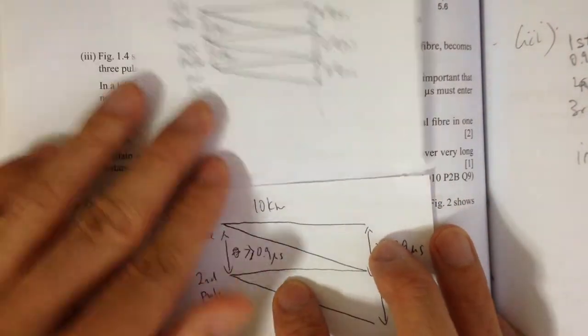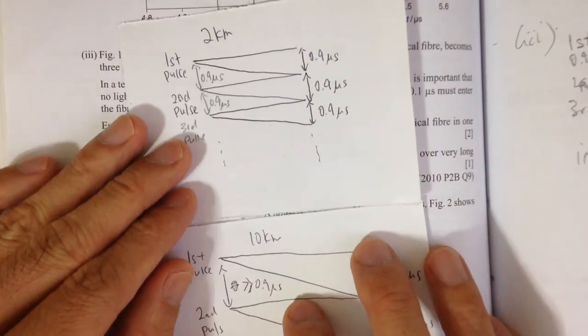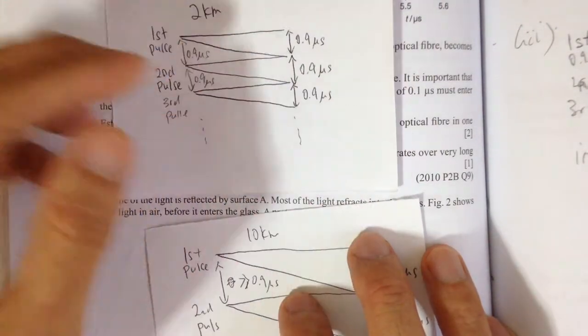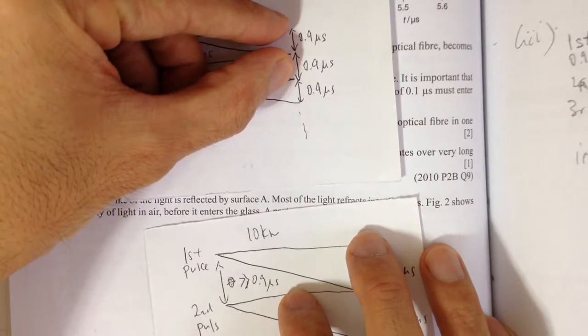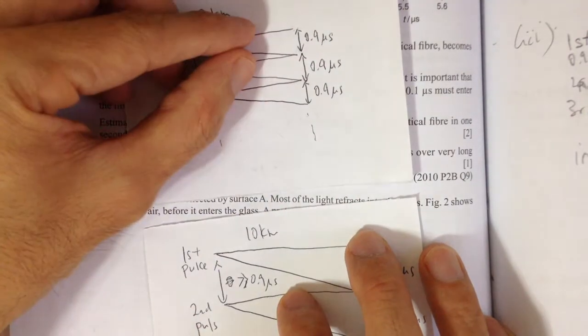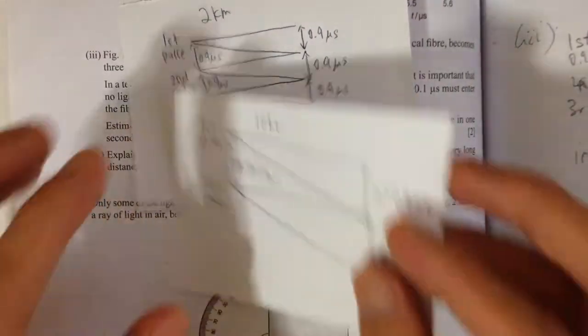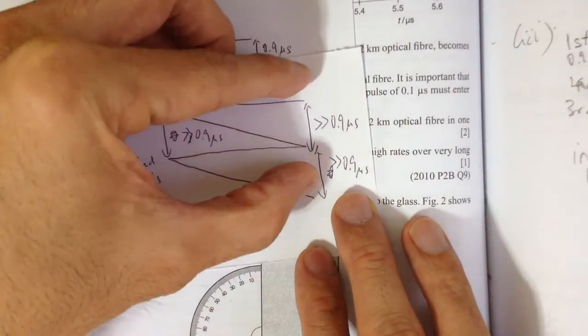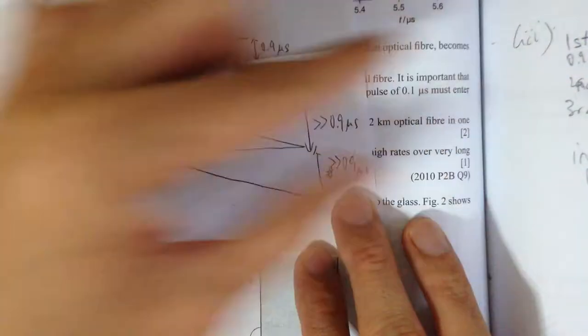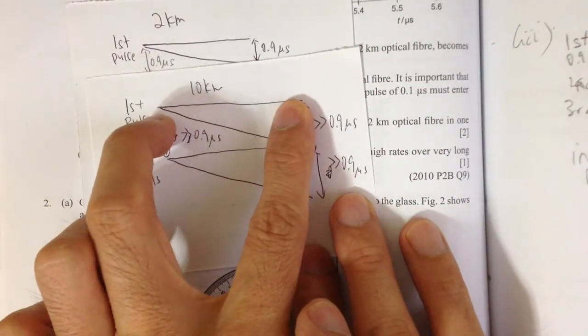So let's look at what is happening here. So this is for 1 pulse, for 2 km. We already have a spread of 0.9 microsecond. For 1 km, the spread is lesser. But imagine if you have something that is 10 km long. This spread of the first pulse will be even larger. It will get larger and larger as the distance is higher.